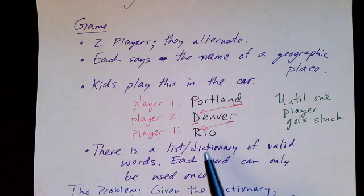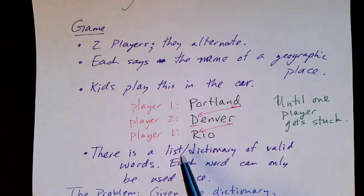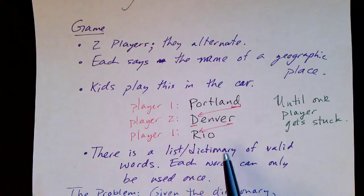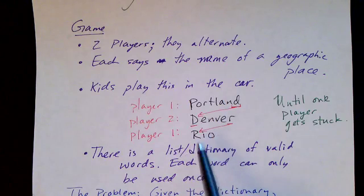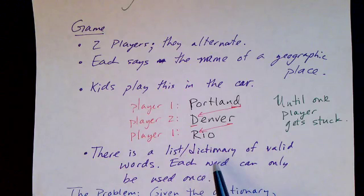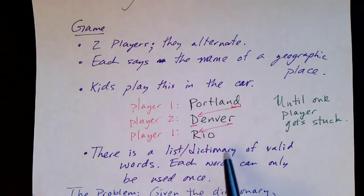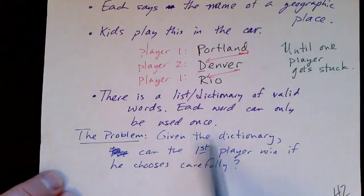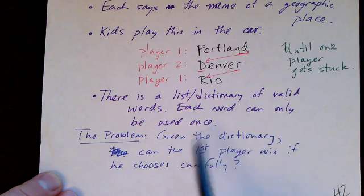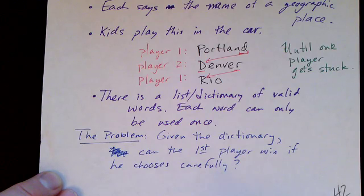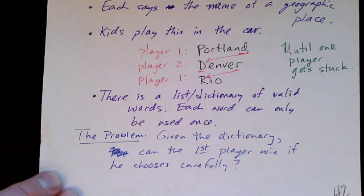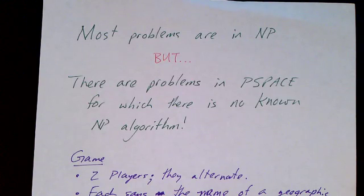And one key fact is that each word can only be used once. To make this more formal, when we're playing it in the car, we just assume that everybody knows what the cities are. But to do this on a computer, we're going to establish a list of valid words or city names. So we assume there's a list or dictionary of valid words, and the list itself constitutes a problem. The problem is this: given the dictionary or list of legal words, can the first player win if that first player chooses his first word correctly? This is an example of a problem that is in P-SPACE but for which there is no known NP algorithm.